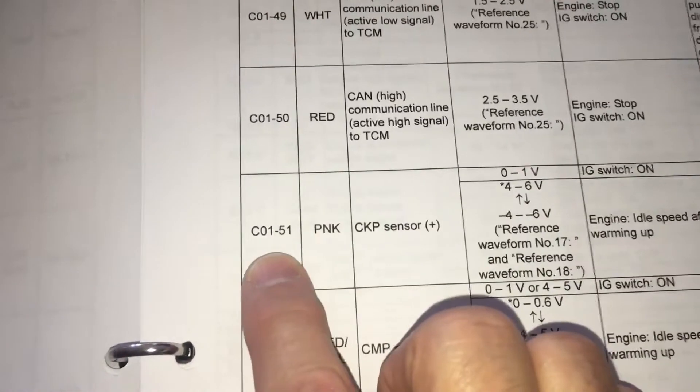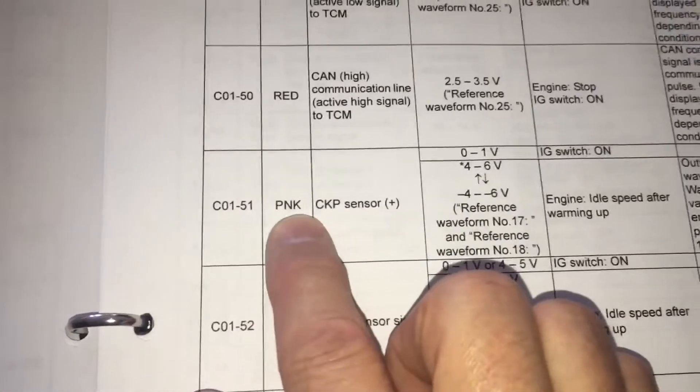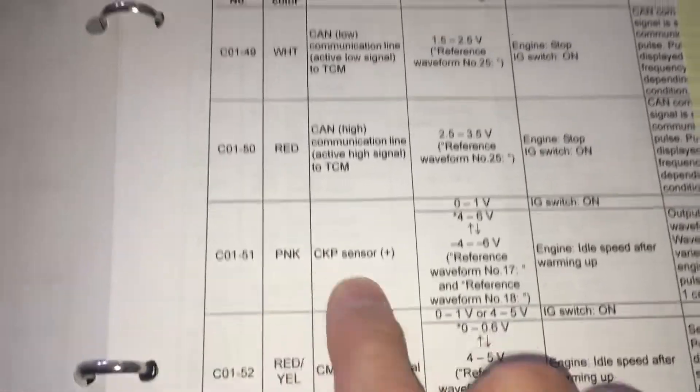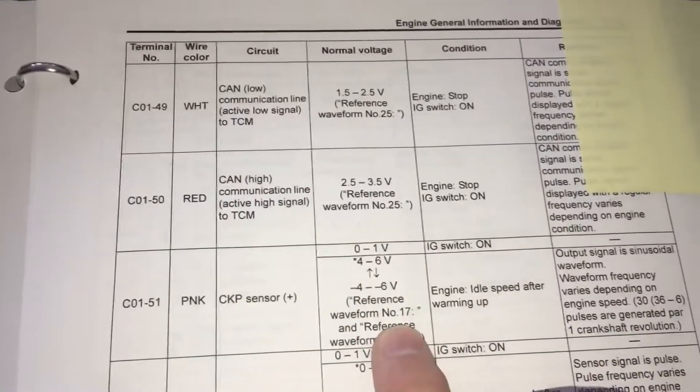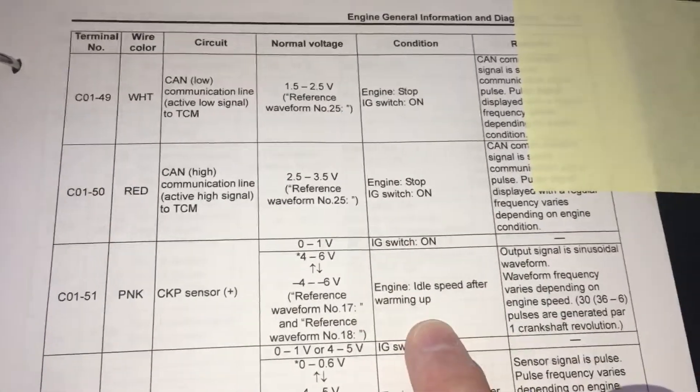C01, 51, pink is the respective color coding of the wiring, tells us what it is, tells us what to expect, tells us the conditions to measure it in, and gives us a generic detail of what we're actually looking at.